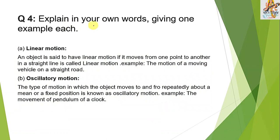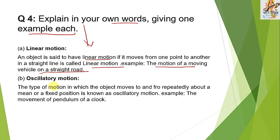Question 4: Explain in your own words, giving one example each. Linear motion: an object is said to have linear motion when it moves from one point to another in a straight line — example, a moving vehicle on a straight road. Oscillatory motion: the object moves to and fro repeatedly about a fixed position — example, the pendulum of a clock.